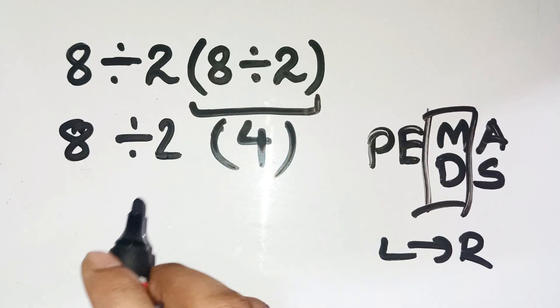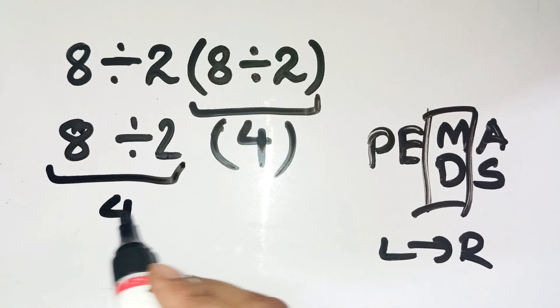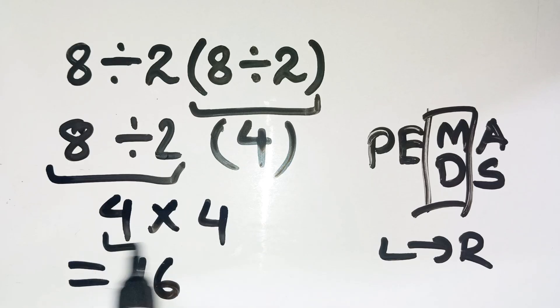Multiplication and division are still equal. So we go left to right, starting with 8 divided by 2. That gives us 4. Now the expression becomes 4 times 4. And 4 times 4 equals 16. So, the correct answer is 16, not 1.